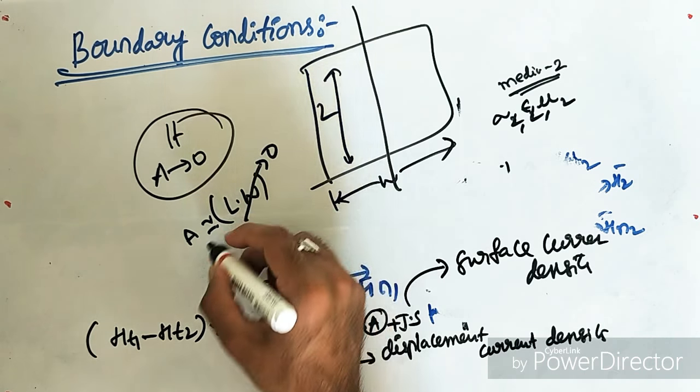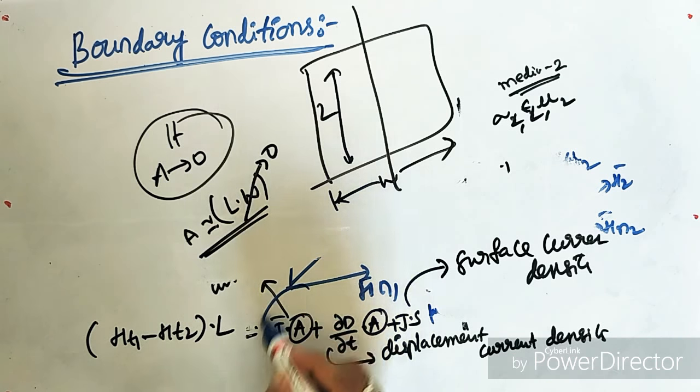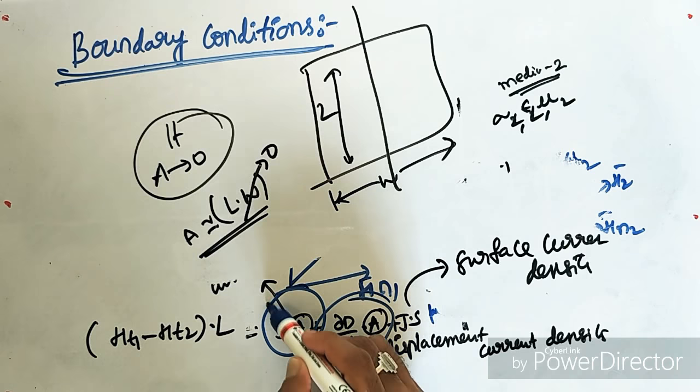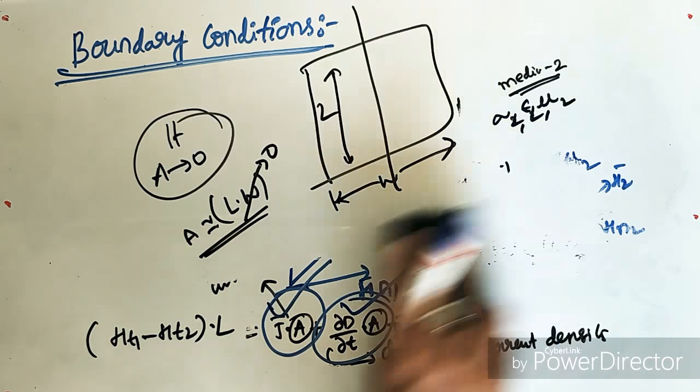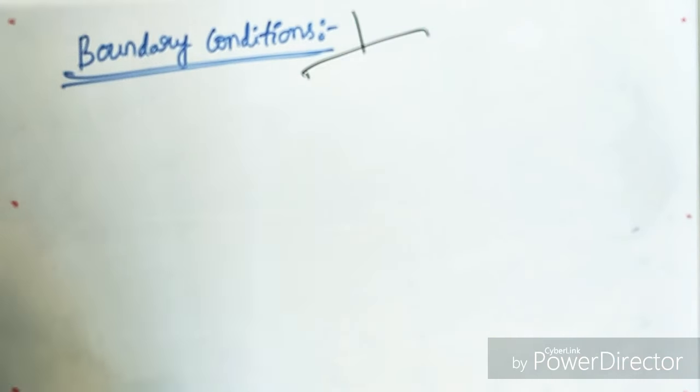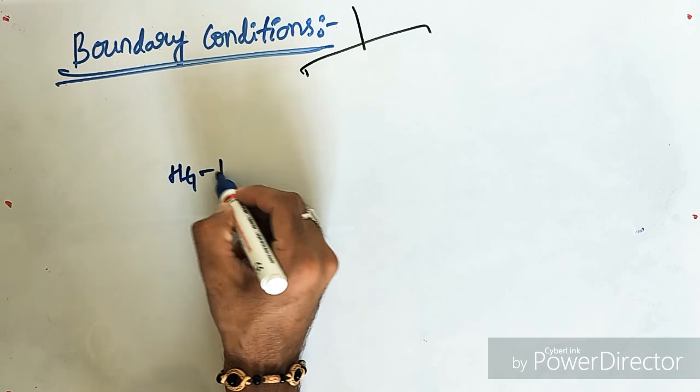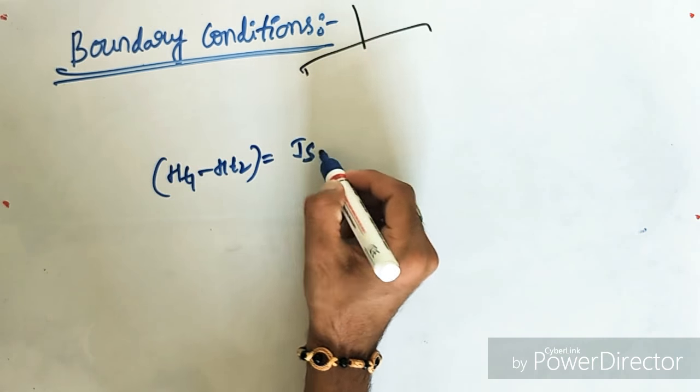Since W tends to 0, the area will be 0. Therefore, we can neglect these two current densities as the conduction current density and the displacement current density. And therefore, the only current that will be affecting the boundary conditions of magnetic field is Ht1 minus Ht2 equal to Js.